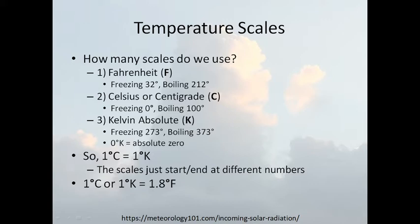We use basically three temperature scales: Fahrenheit, Celsius (or centigrade), and Kelvin. Celsius developed the Celsius scale and named it centigrade — that's why you can call it either one. The scales just start and end at different numbers. To convert Fahrenheit to Celsius, subtract 32 degrees and divide by 1.8. To convert Celsius to Fahrenheit, multiply the Celsius temperature by 1.8 and add 32.